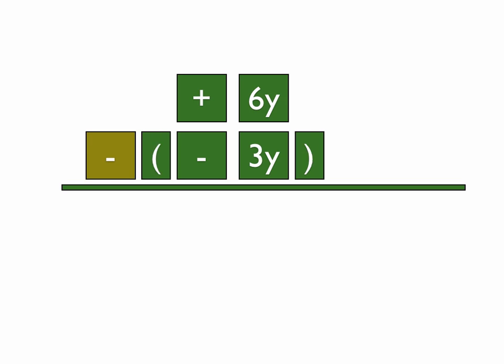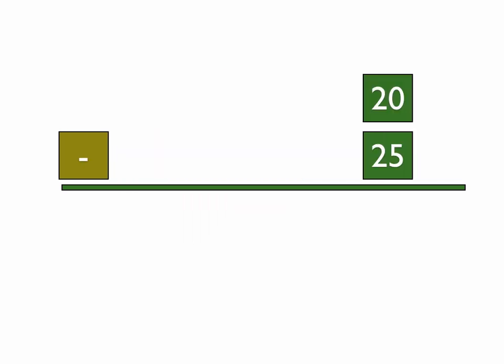We have a positive 6y, and we have minus a negative 3y. Remember, whenever we subtract a negative, both of them become positive. Whenever you subtract a negative, both things become positive, and we get 9y. And then the last part of the equation is 20 minus 25. The negative is bigger, so it's negative 5.